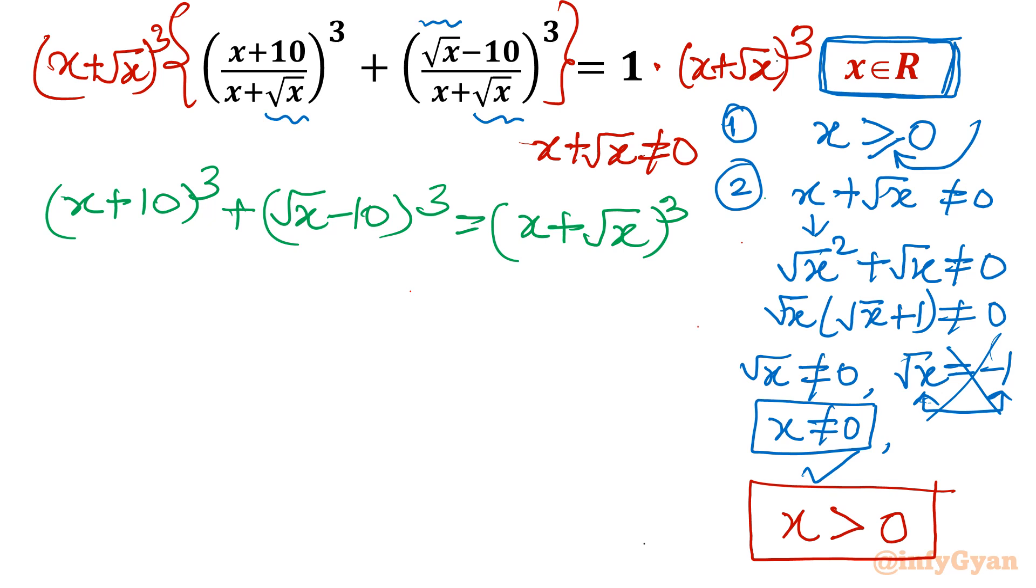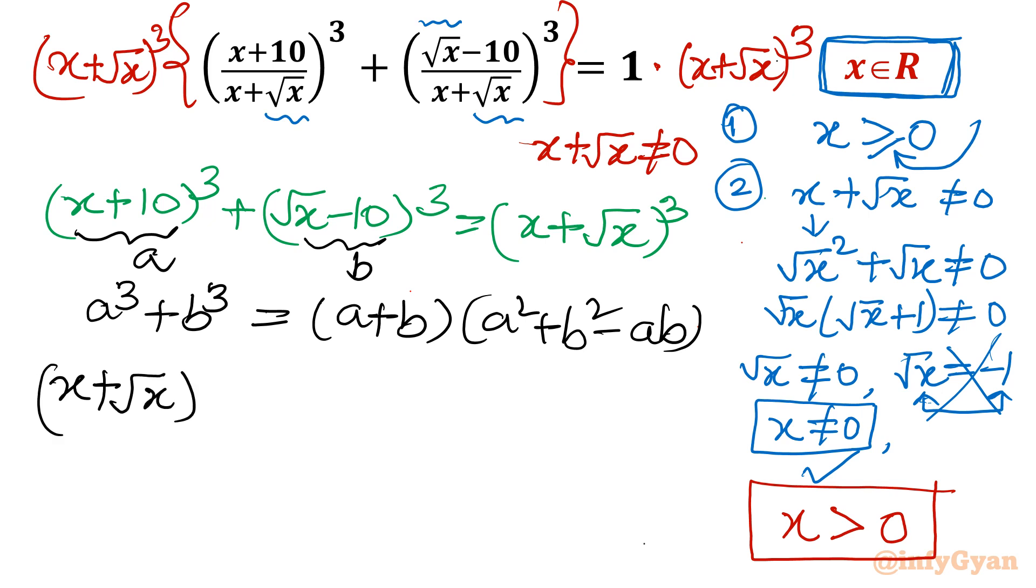Now I have to solve this equation. I will use the identity a³ + b³. If suppose this is a and this is b, then a³ + b³ formula from algebra is (a+b)(a² + b² - ab). Let us apply. So a + b: a is x+10, b is √x-10. Once you add, 10 and -10 will be over. What would be left? x + √x.